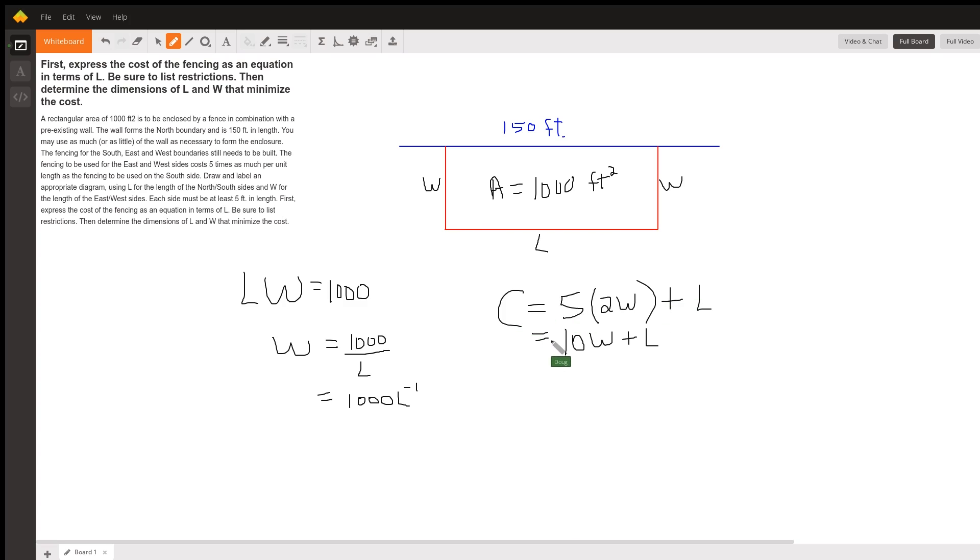So the cost function is 10W plus L. Now, this equation over here is what allows us to establish a relationship between L and W so that we can get the cost function depending on only one variable.